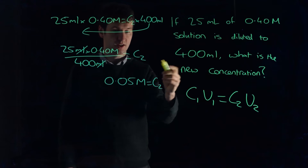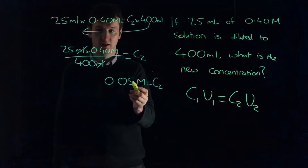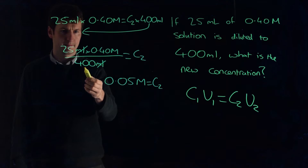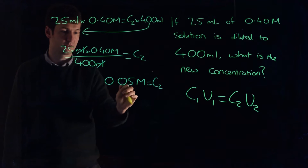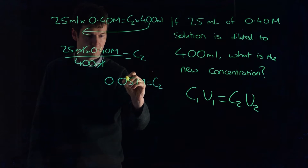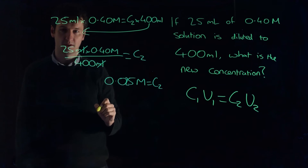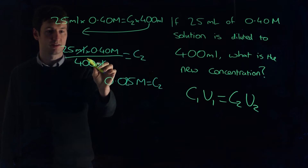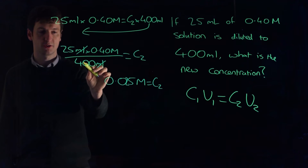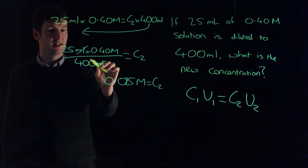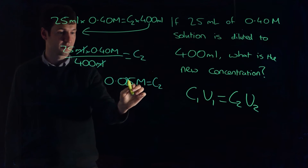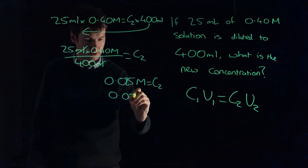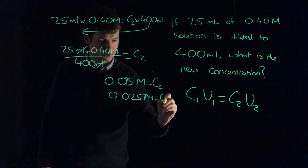So our new concentration is going to be 0.05 molar. Or — wait, let me check this. No, it's not going to be 0.05; it's going to be 0.025 molar. You can put that into your calculator and check, but if I want to verify: 25 over 400 is the same as 1 over 16, and 16 will go into 0.40 exactly 0.025 times. So 0.025 molar is concentration number 2.